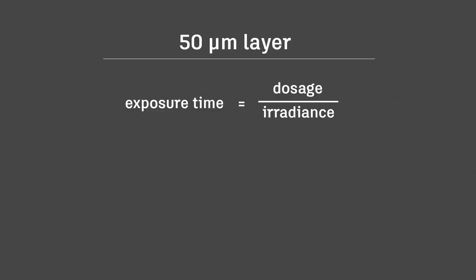For the Ember printer, the irradiance is about 20 milliwatts per centimeter squared. This gives us an exposure time of 1.25 seconds. But we're not quite there yet.